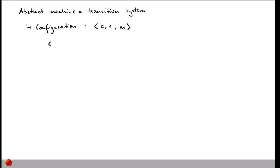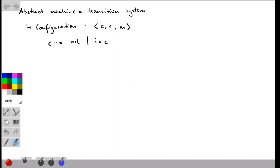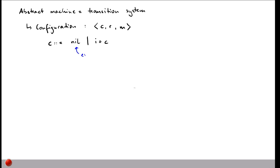In the control stack we can have two things: nil, which means the stack is empty with nothing to execute — this typically happens at the very end of execution — or we can have an instruction i pushed on top of the stack, followed by the rest of the stack. Since it's a stack, execution looks at the top first, so instruction i is the one executed first.